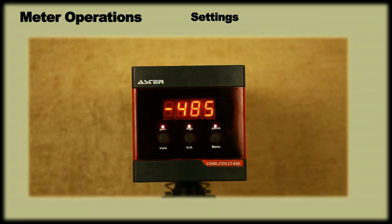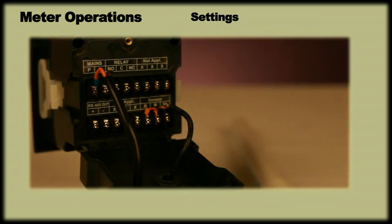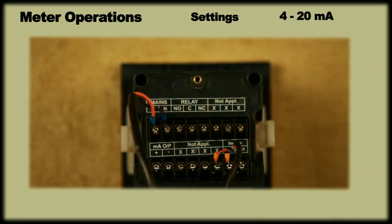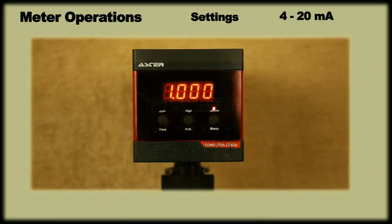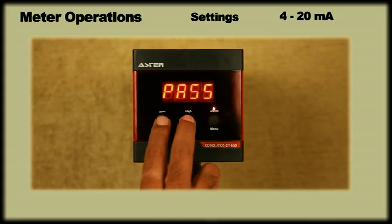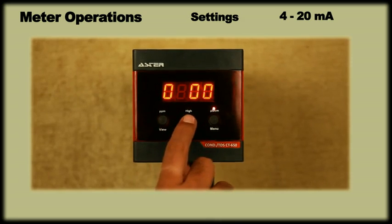As mentioned earlier, the meter is available with an optional output of either RS-485 or 4-20 mA. Let us first understand the settings for 4-20 mA. In case your meter has 4-20 mA output, the default 0 and span setting can be viewed by pressing View key. In case the factory setting of 0 and span needs to be changed based on the process requirement, press View and ACK key simultaneously and enter password 0678.